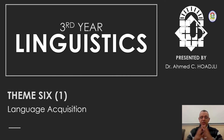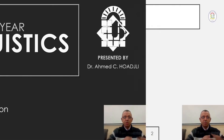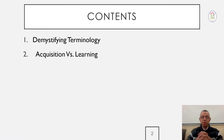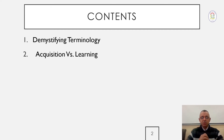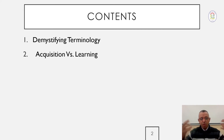Stage one is language acquisition. In Theme 6, we are going to present basics regarding this theme. In the first part, we are going to talk about two main points. First, we want to explain some relevant terminology to language acquisition. Second, we are going to explain the difference between the two basic fundamental concepts: acquisition and learning, because sometimes these two concepts are very debatable and confusing.